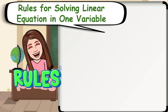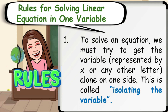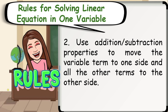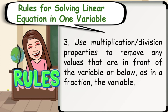Here are the rules for solving a linear equation in one variable. Number 1: to solve an equation, we must try to get the variable represented by x or any other letter alone on one side — this is called isolating the variable. Number 2: use addition or subtraction properties to move the variable term to one side and all other terms to the other side. Number 3: use multiplication or division properties to remove any values in front of or below the variable. And number 4: check your answer.